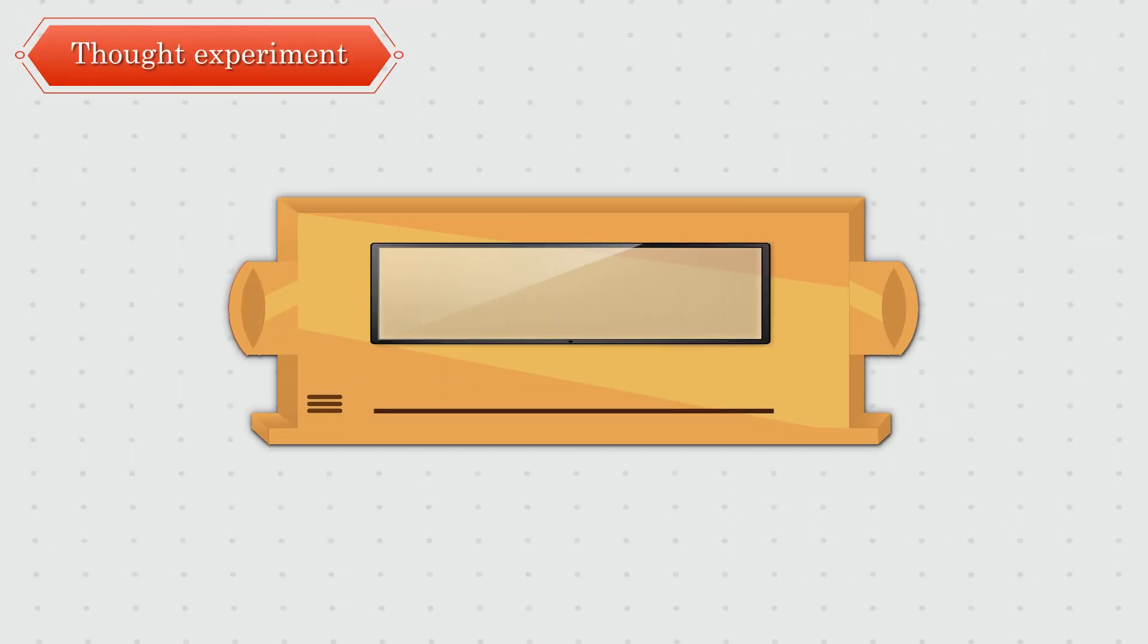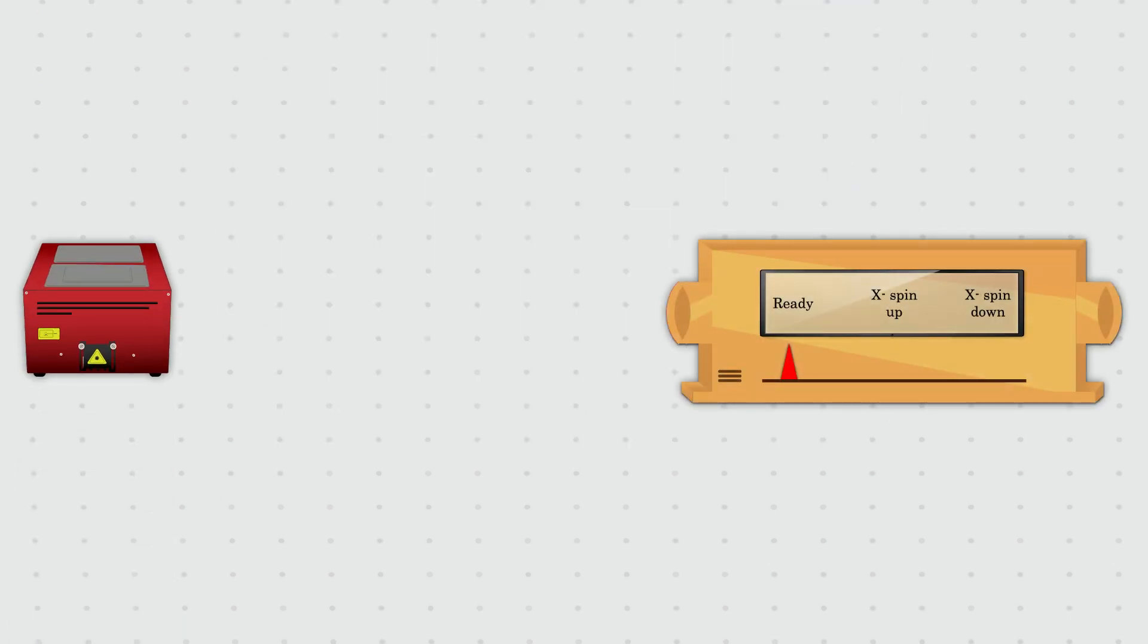The device from the book is called the X-Spin Detector, with an opening where electrons may enter and a pointer that can point to one of three labels: Ready, indicating the system is prepared to take a new measurement; Spin up, indicating the system measured has a spin up; and Spin down, indicating the system measured has a spin down. The up and down are in the X direction.